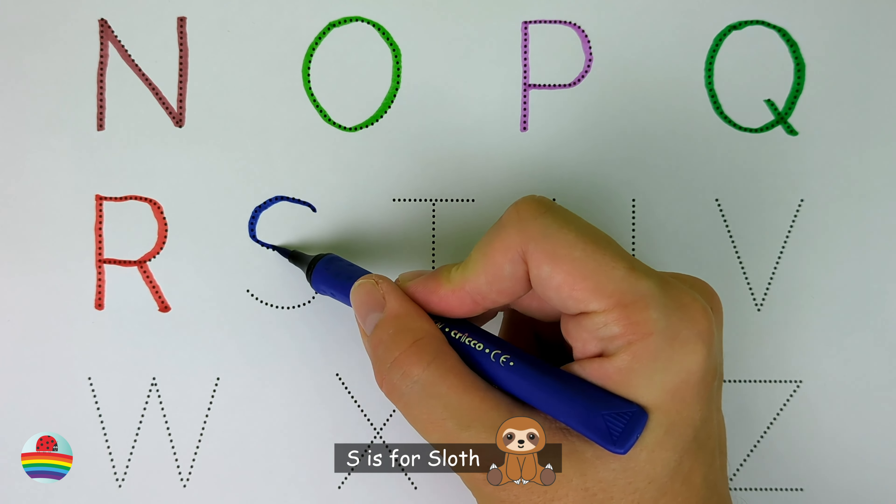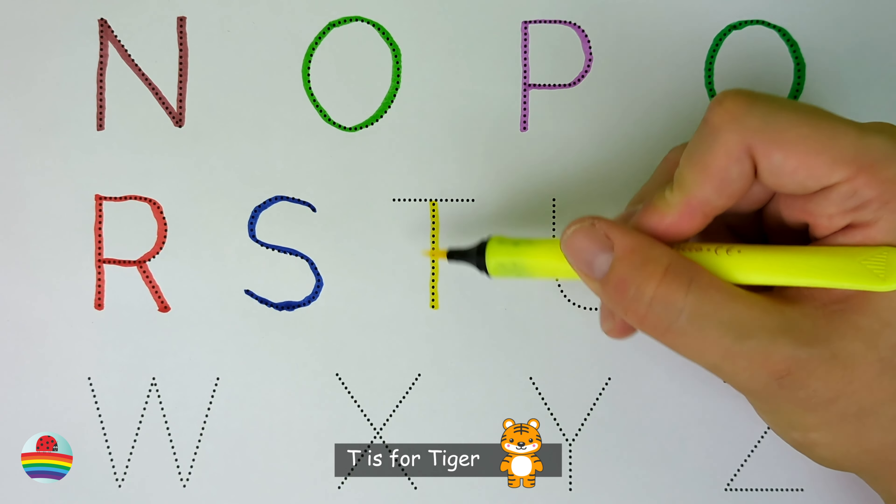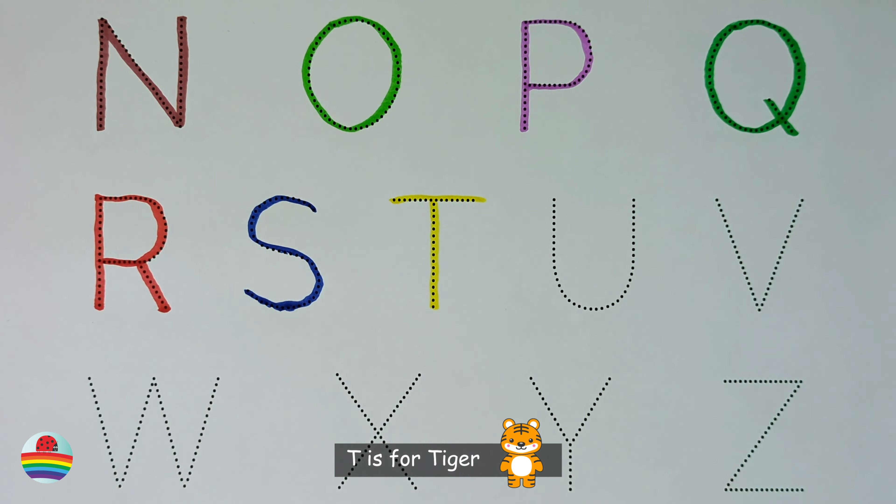S. S is for sloth. S. T. T is for tiger. T.